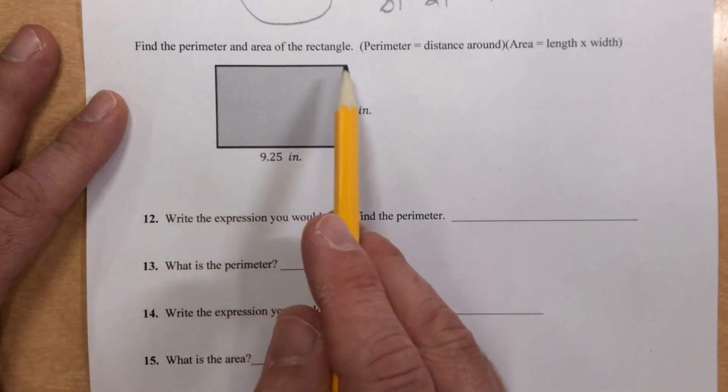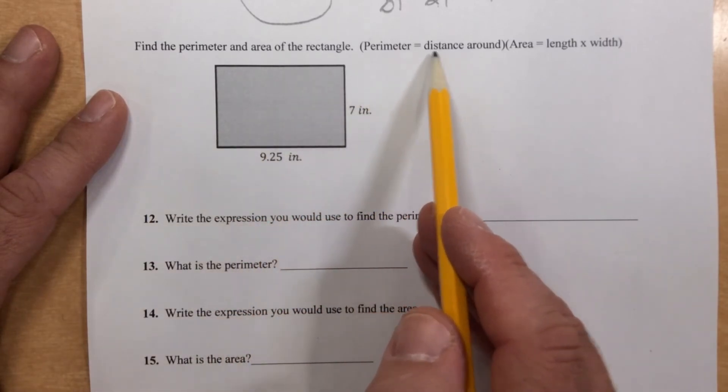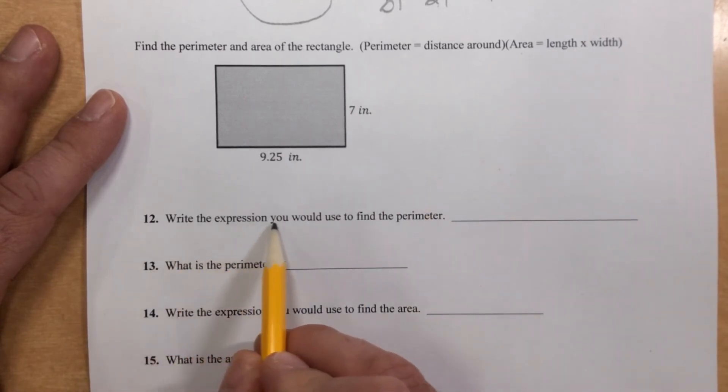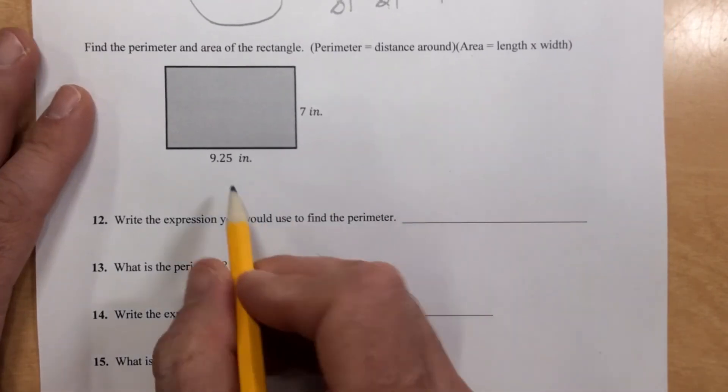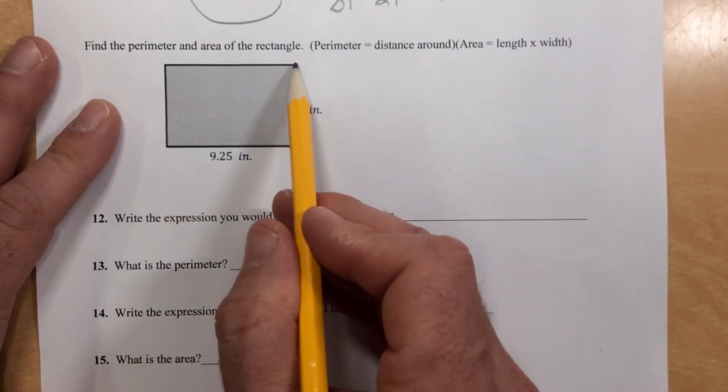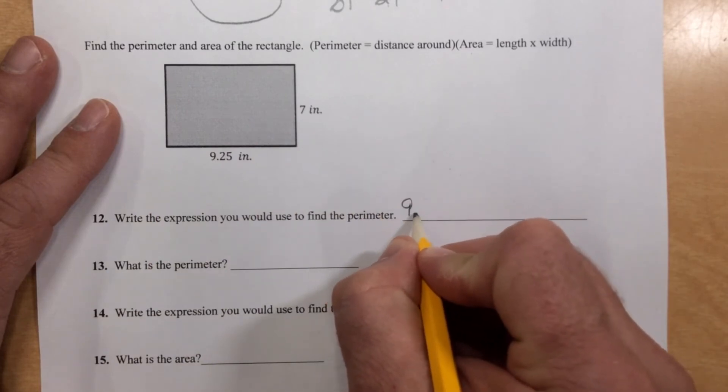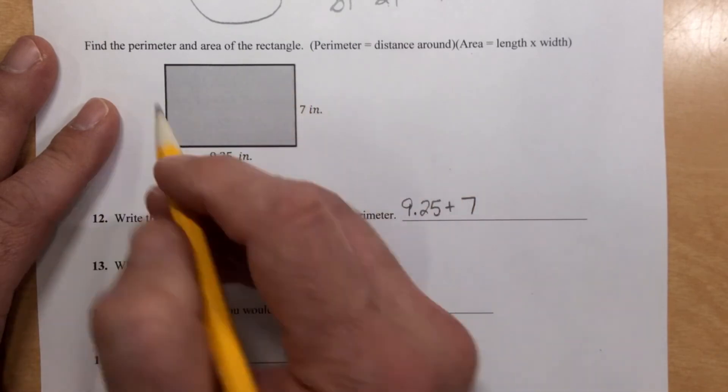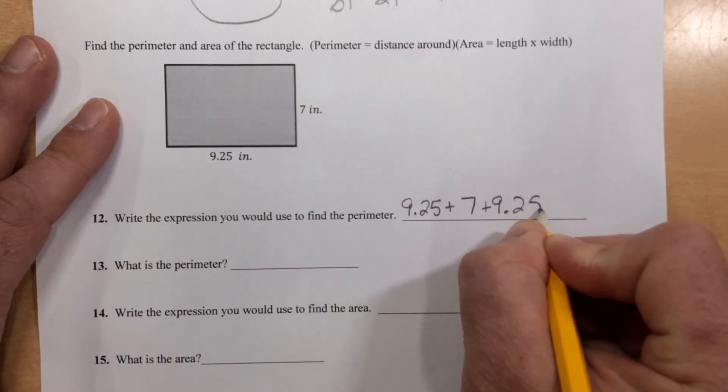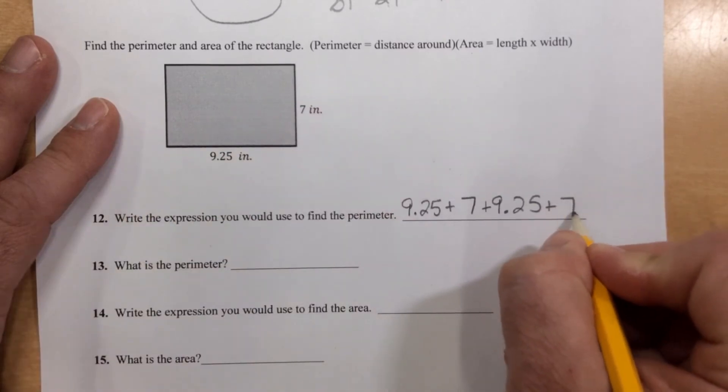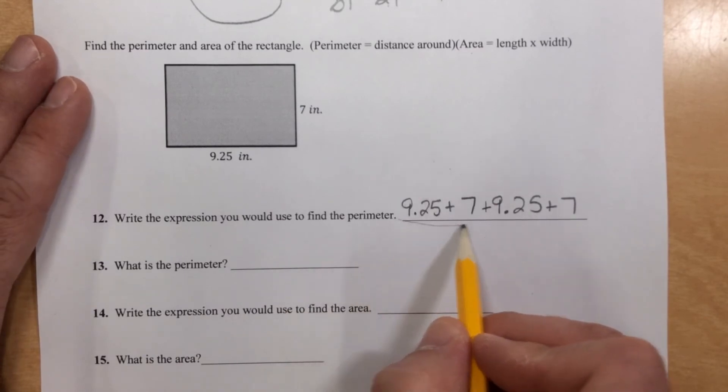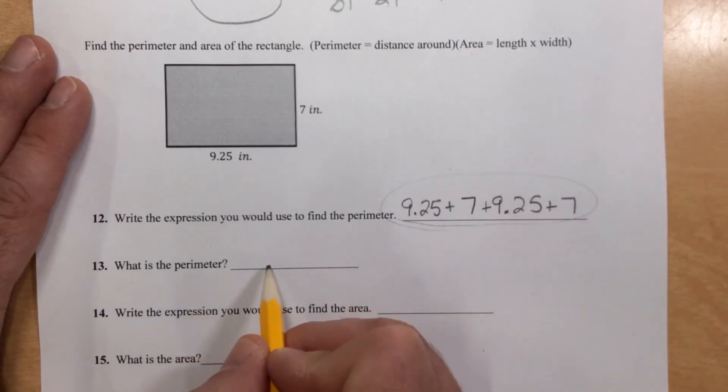Find the perimeter and area of the rectangle. Remember, perimeter is the distance around it and area is the length times the width. Write the expression you would use to find the perimeter. Well, we add up all the distances. Now, not just these two, though. Remember, we have to go all the way around it. So we've got 9.25 plus 7 plus another 9.25 plus another 7. Add all of those up, and you'll have your, so that's the answer for number 12 right there. Add them up to get your answer, which is the answer to number 13. I'll let you do that.